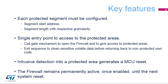The firewall is based on a call gate mechanism used to open the access to these protected segments. The call gate function is the single entry point able to open the firewall and enable access to the protected segments. To ensure sensitive volatile data is erased before returning back to non-protected user code, the call gate mechanism specifies the exact exit point when jumping back from the protected code segment. The goal is to detect any non-expected code branches and to react by resetting the MCU.